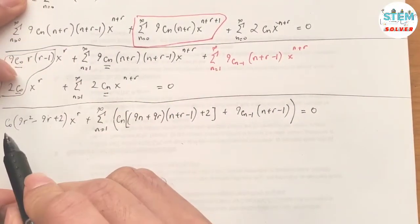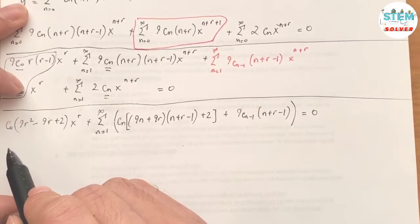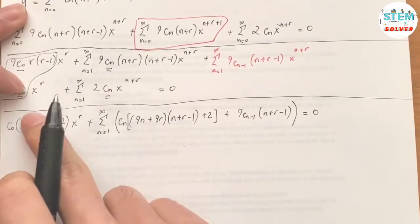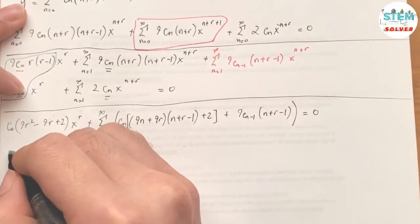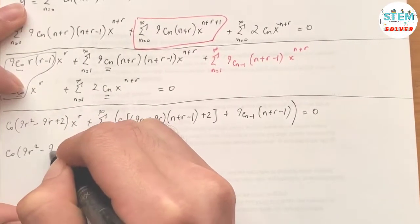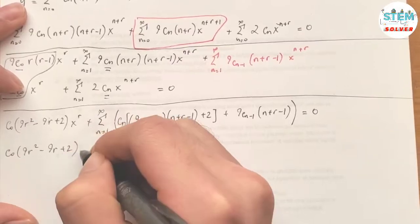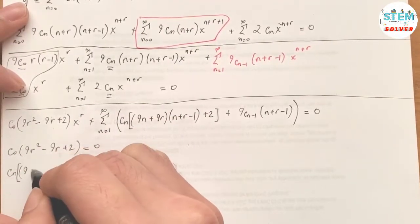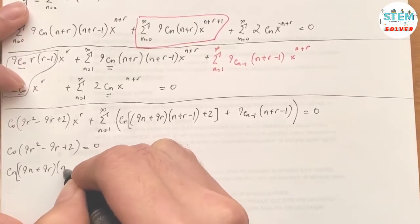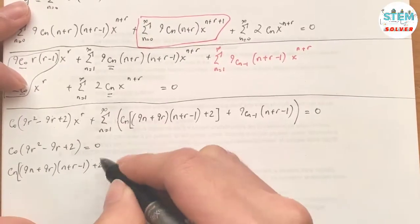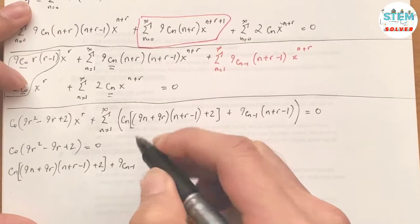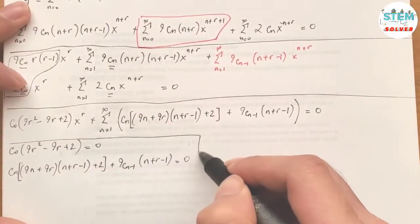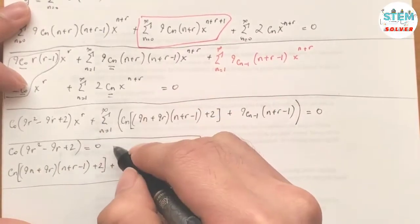Now we equate coefficients. Setting the coefficient of x^r to zero: c₀(9r² − 9r + 2) = 0. And setting the general coefficient to zero gives the recurrence relation: cₙ[9(n+r)(n+r−1) + 2] + 9cₙ₋₁(n+r−1) = 0.